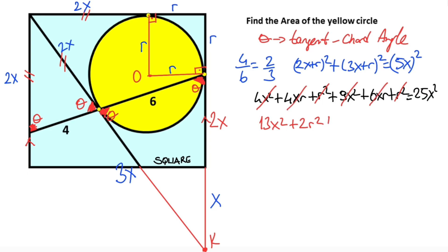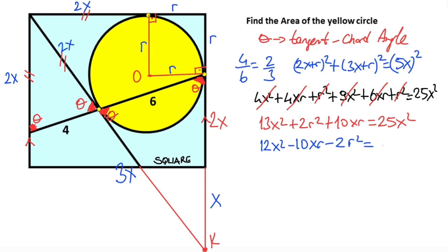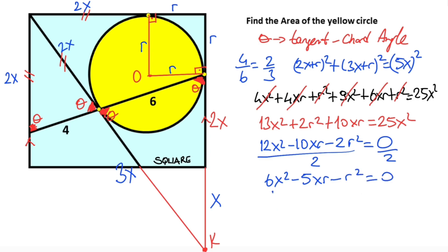Combining terms: four xr plus six xr equals ten xr, giving us ten xr on the left, equal to five x squared on the right. Moving all terms to one side, that means twelve x squared minus ten xr minus two r squared equals zero. Dividing both sides by two, we get six x squared minus five xr minus r squared equals zero.